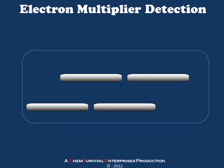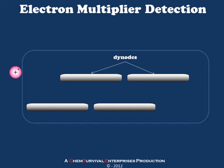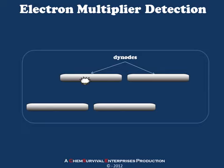One method of detection frequently used in mass spectrometry is the electron multiplier. An electron multiplier is a series of special plates known as dynodes, represented here by these gray-colored bars. Dynodes are made of a material which ejects electrons in response to physical impacts, such as the impact of a cation or the impact of an electron. This means that if our analyte ion strikes a dynode, it's expected to perturb the dynode in a way that causes the release of at least one electron, sometimes more.